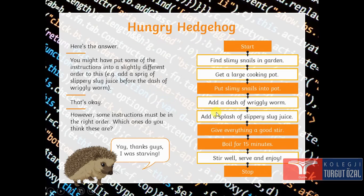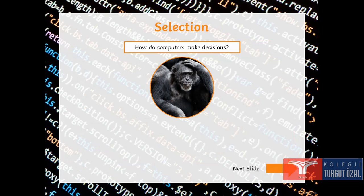Now, you might put these instructions in a slightly different order. For example, add a spring of before this. But that's okay. Some instructions must be in right order. For example, this will be before end. Other may be different. You may think this in a different way. It doesn't mean that your flow chart will be wrong. There are so many ways of solving algorithms.